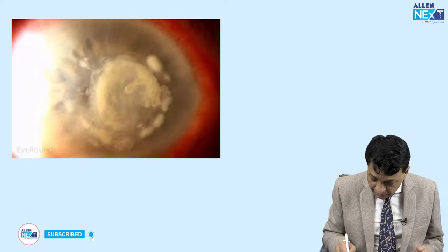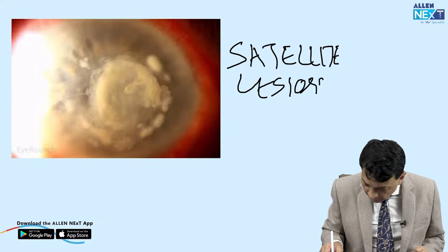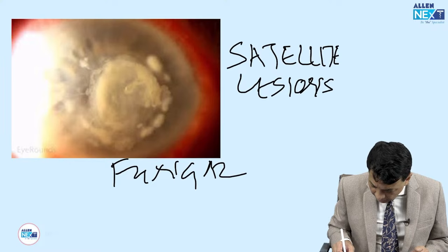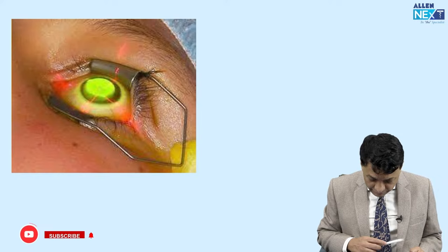Look at this infiltration on the cornea — you can see a main ulcer with whitish deposits and a lucid interval gap between them. These are the famous satellite lesions. Satellite lesions are the most famous finding seen only in fungal corneal ulcers — not in any other type of corneal ulcer. Satellite lesions are diagnostic of fungal corneal ulcers.